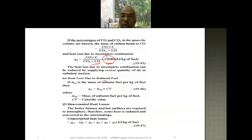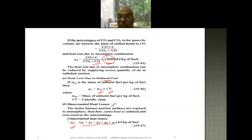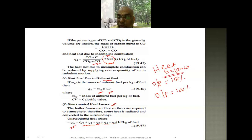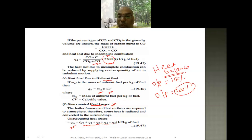Heat lost due to unburnt fuel equals the mass of unburnt fuel multiplied by the calorific value of the fuel. Unaccounted losses are calculated as the total heat supplied to the boiler minus all the identified heat losses. The heat input should equal 100 percent and the heat output should also be equivalent to 100 percent — that is why it is called the heat balance. The unaccounted loss equals the input energy minus the sum of all five categories of energy output.